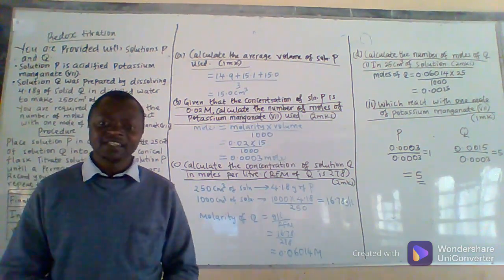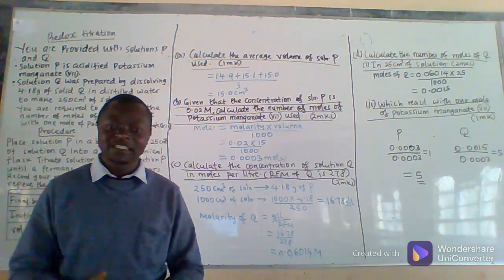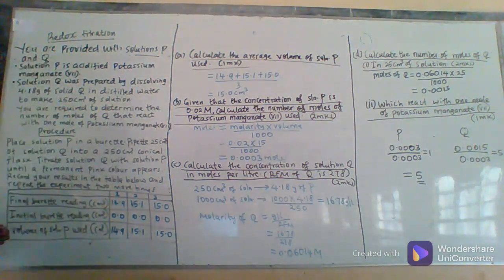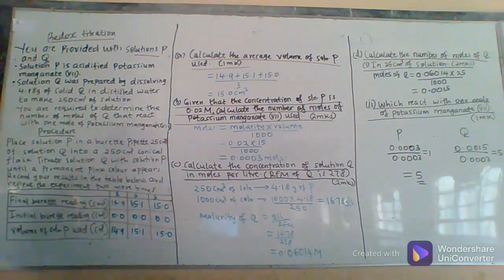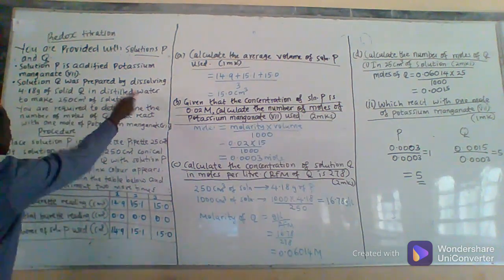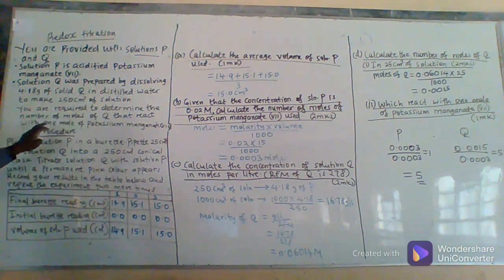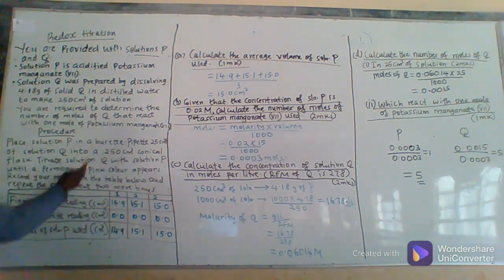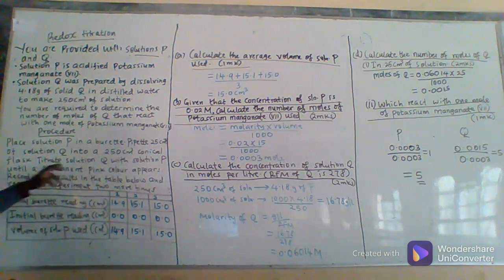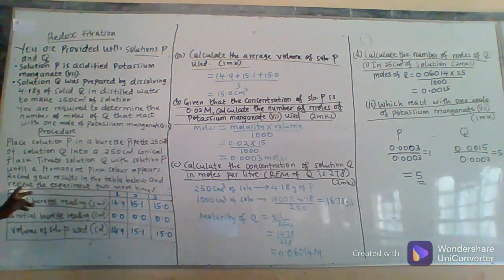As an example, I have a question here — Question 1 of KCC 2003. You are provided with solution P and solution Q. Solution P is acidified potassium permanganate (KMnO₄) and solution Q is prepared by dissolving 4.18 grams of solid Q in distilled water. You are required to determine the number of moles of Q that react with one mole of potassium permanganate. The procedure is: place 25 cm³ of solution P in a burette, then pipette 25 cm³ of solution Q into a 250 ml conical flask. Titrate solution Q with solution P until a permanent pink color appears and record your results.